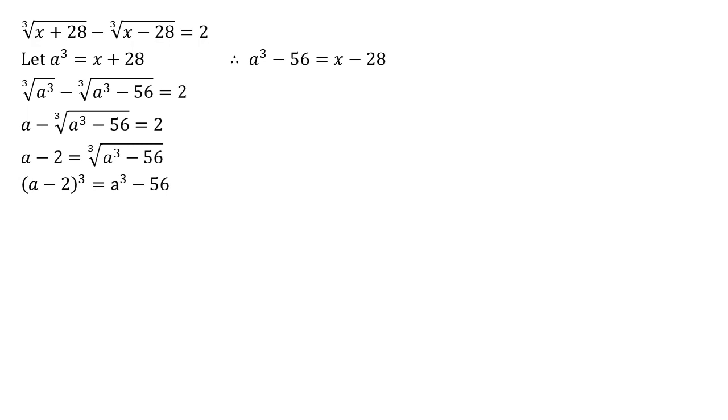Using our binomial theorem to expand the cube, we get that a minus two cubed is equal to a cubed plus three times a squared times negative two plus three times a times negative two squared plus negative two cubed.